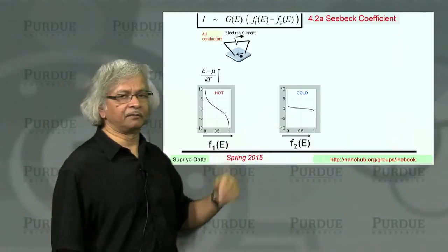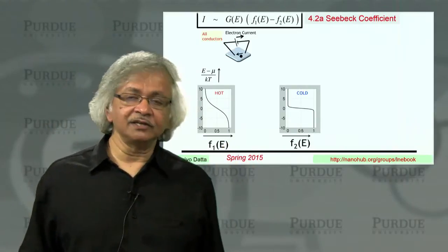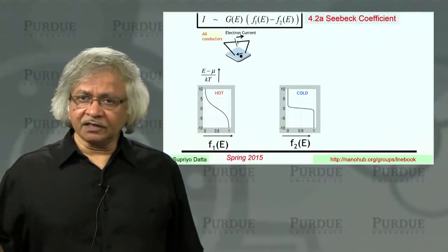And so F1 is different from F2, and that could give rise to a current flow. And that's very true.